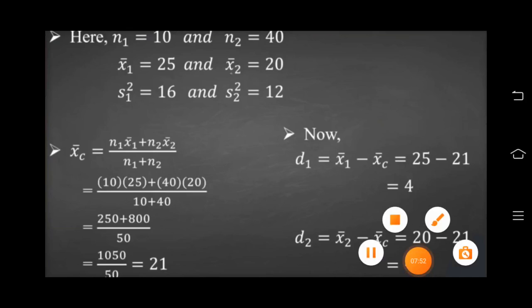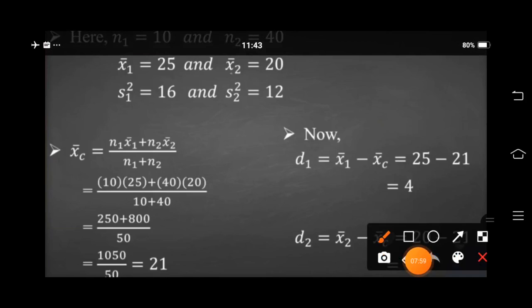Let us first find out the combined mean. Write down the formula: combined mean equals n1 times x-bar1 plus n2 times x-bar2, divided by n1 plus n2. So: 10 into 25 = 250, plus 40 into 20 = 800, divided by 10 plus 40 = 50. Total 1050 divided by 50 equals 21.